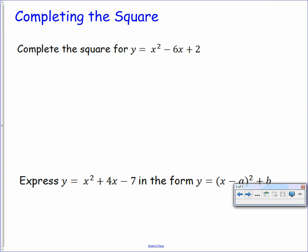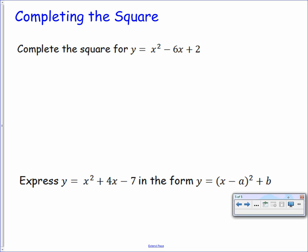Now we're on to completing the square. These are two types of questions that you could be asked for completing the square at this stage. Simply complete the square for y equals x squared minus 6x plus 2. Or you could be asked to express y equals x squared plus 4x minus 7 in the form y equals x minus a squared plus b. These values of a and b could be any two letters. It's the form of the equation that you need to be able to recognize.